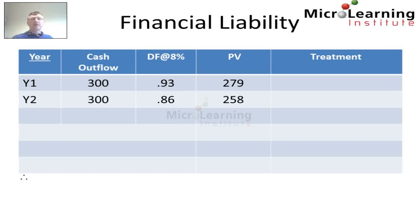Similarly for year 2 we write a check for another $300,000 and we discount it this time at a factor of 0.86 to a present value of $258,000.